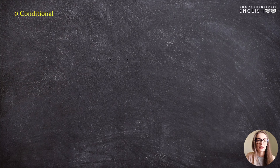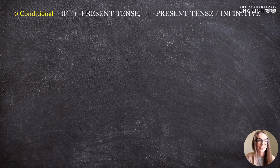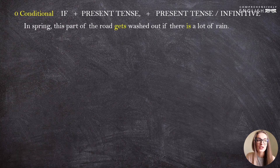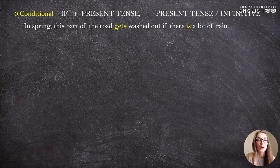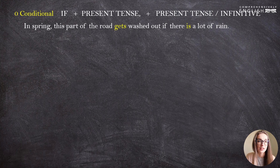The formula of zero conditional is: if plus a present tense plus a present tense or the infinitive. For example: 'In spring this part of the road gets washed out if there is a lot of rain.' That happens on a regular basis, so we can consider it to be a fact. In conditional sentences of this type we can replace 'if' with 'when' because we speak about things that happen on a regular basis. Zero conditional expresses certainty.